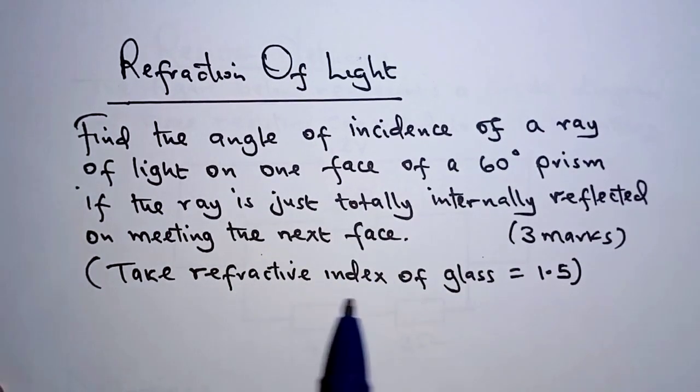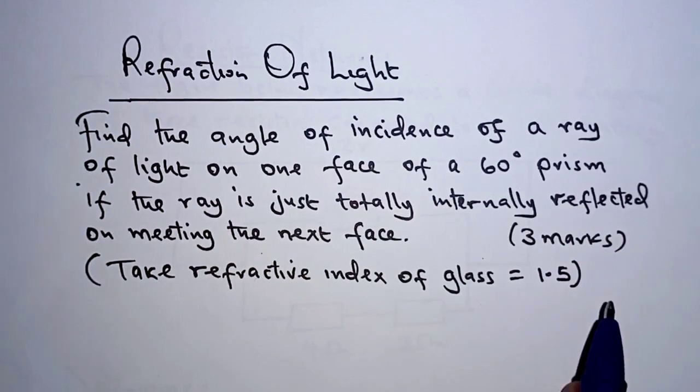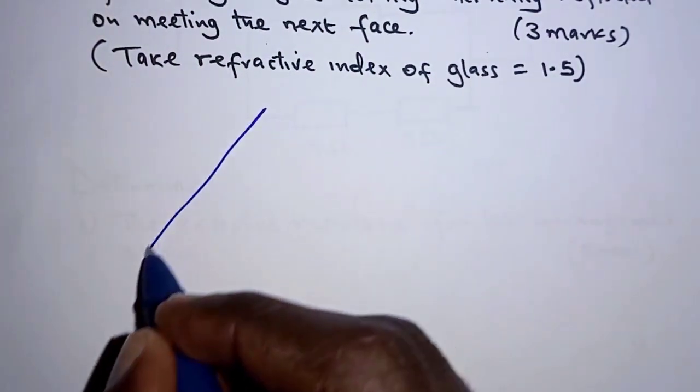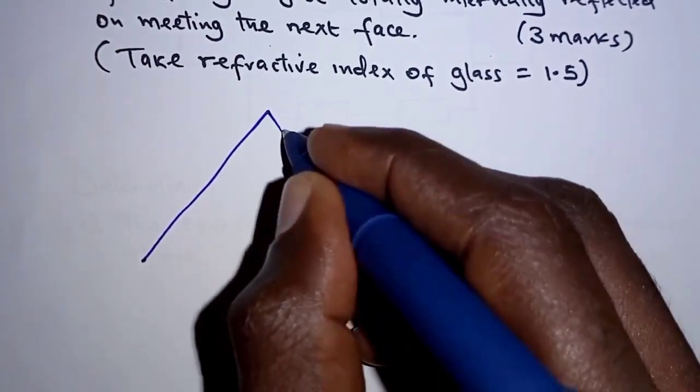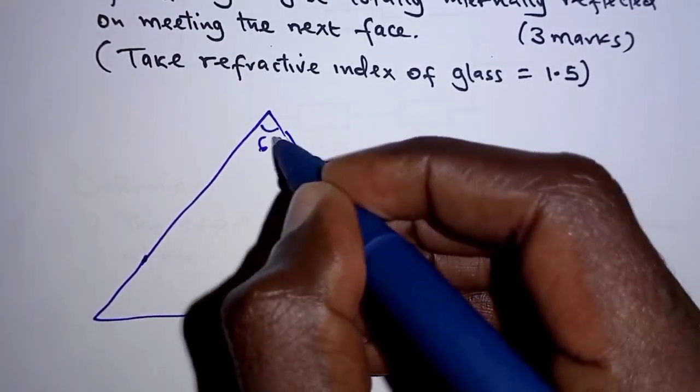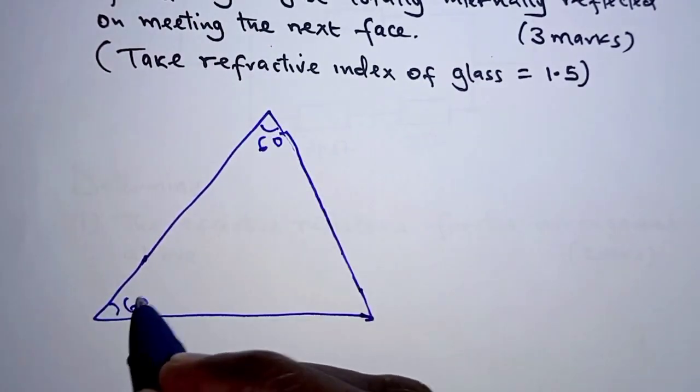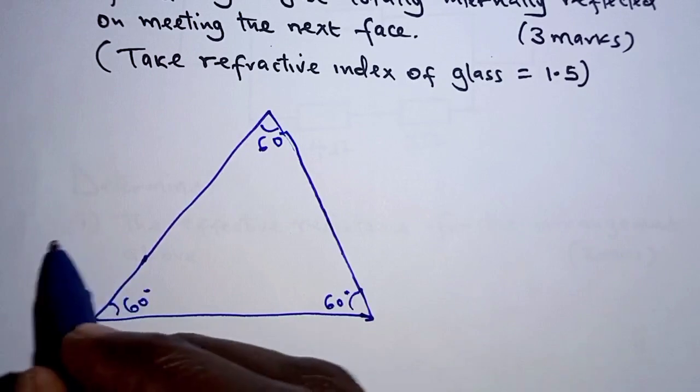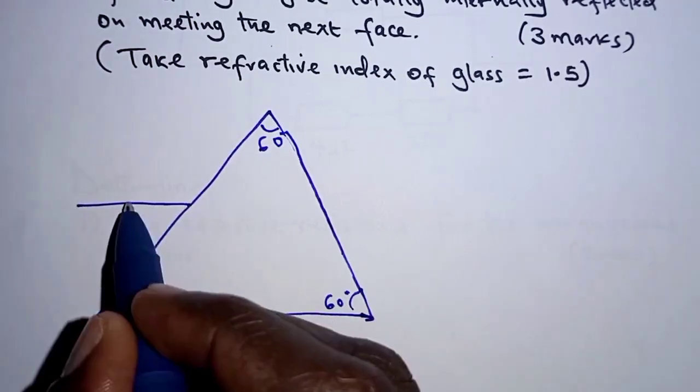Take refractive index of glass to be 1.5. So we have a prism, and for this prism the angles here are 60 degrees, 60 degrees, and 60 degrees. And then we have a ray of light approaching it on one face.